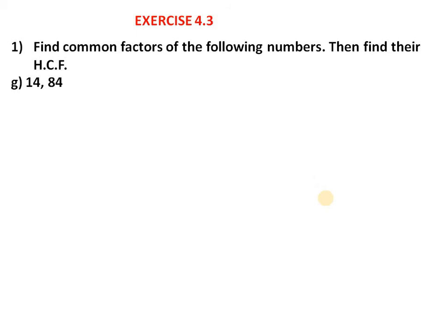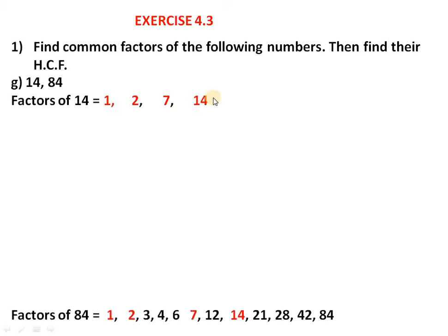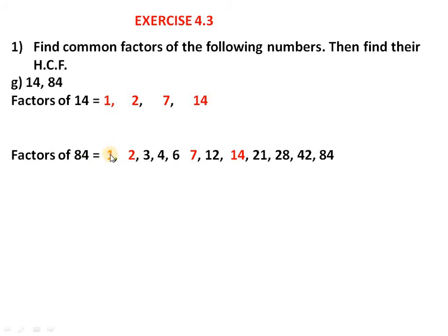Part G: 14 and 84. Factors of 14: 1 × 14, 2 × 7 — so factors are 1, 2, 7, and 14. We stop at 14. Factors of 84: 1 × 84, 2 × 42, 3 × 28, 4 × 21, 6 × 14, 7 × 12.